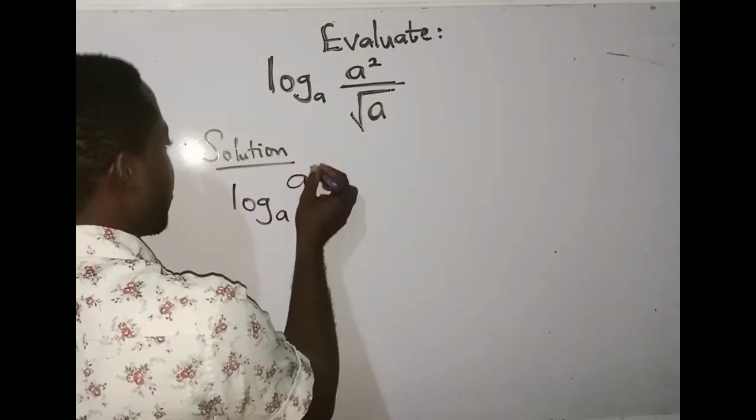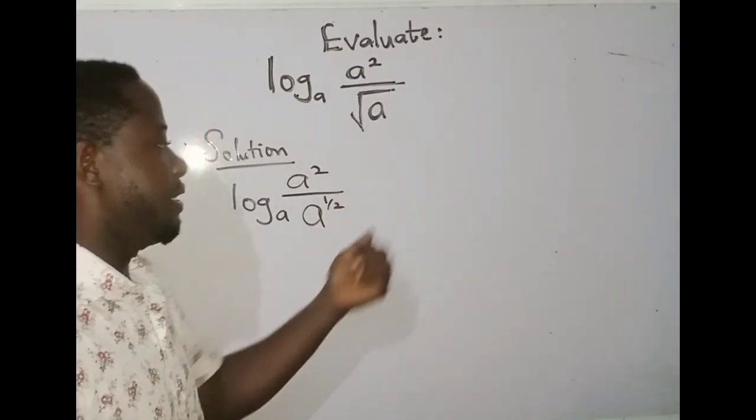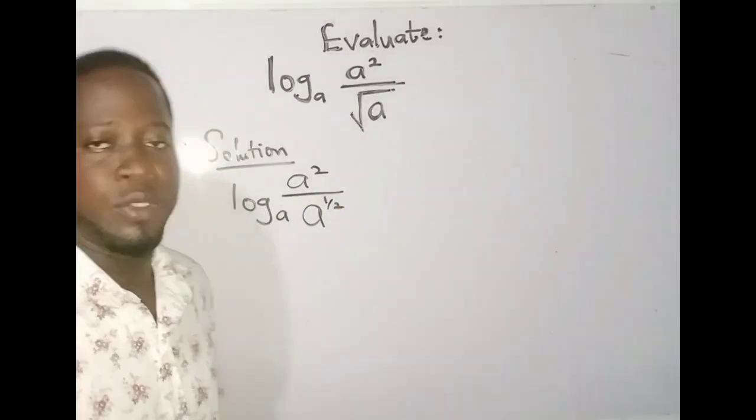I'm going to have log of a² all over a raised to the power of 1/2. Don't forget, in indices, root a simply means a raised to the power of 1/2.